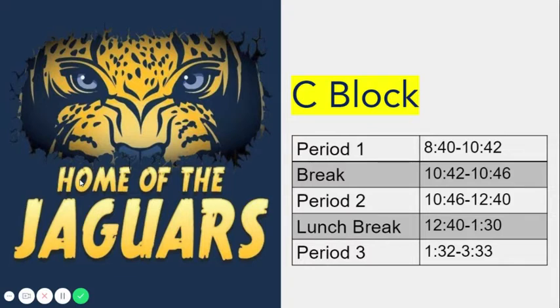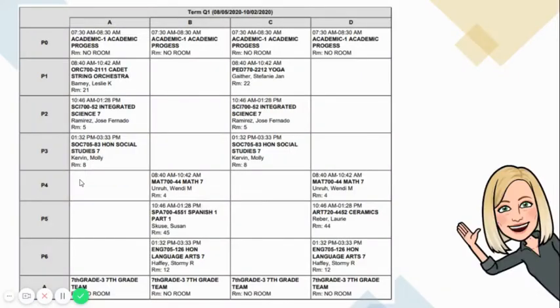If you're not sure which classes you have for periods 1, 2, and 3 on a C-block, log into Infinite Campus, click on Schedule, and look at the C-column. This will tell you which classes to work on today.